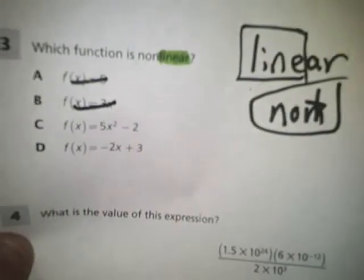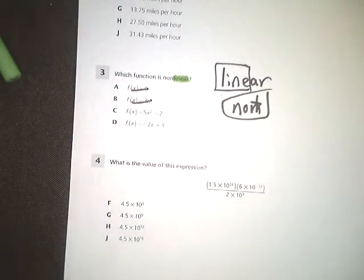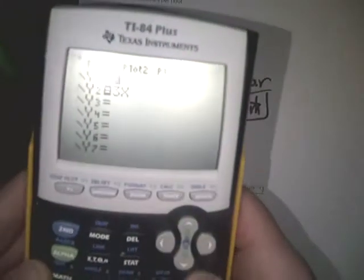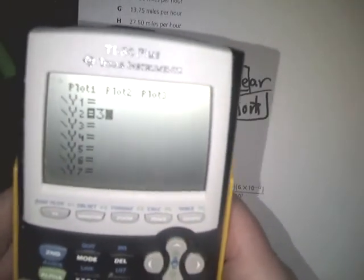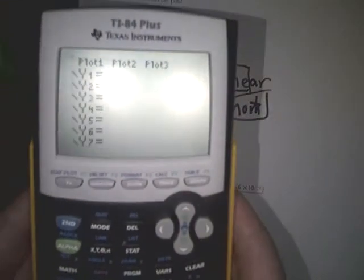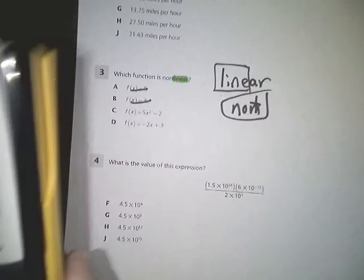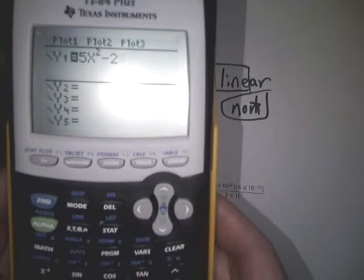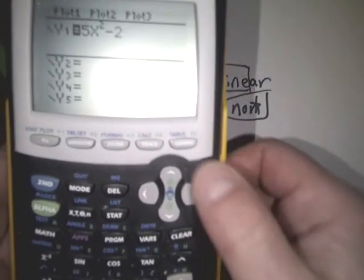C says 5x squared minus 2. So I can go in. I'll clear out these. And type in 5x squared minus 2. And hit graph.